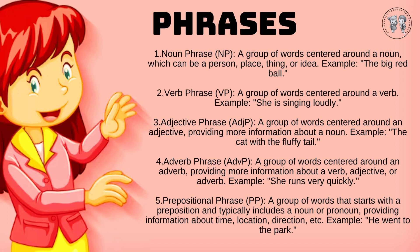3. Adjective phrase (ADJP): A group of words centered around an adjective, providing more information about a noun. Example: The cat with the fluffy tail.